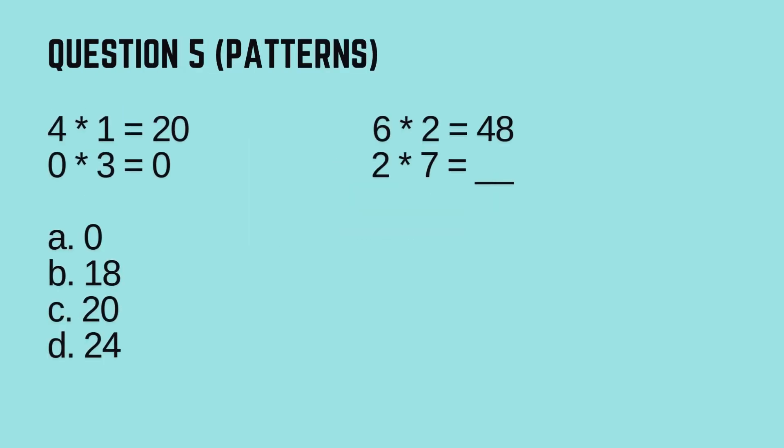Question 5, Patterns. 1 asterisk 4 equals 20, 3 asterisk 0 equals 6, 2 asterisk 8 equals 48, 2 asterisk 7 equals blank. Options: A, 0; B, 18; C, 20; D, 24. Timer starts now!